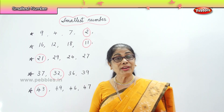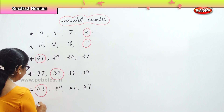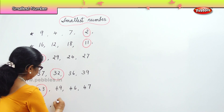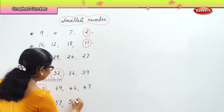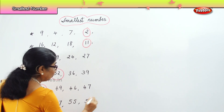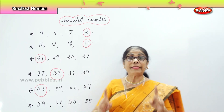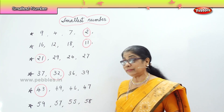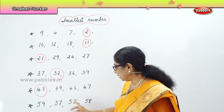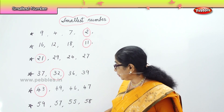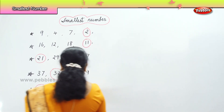Now we will do another lot of numbers in 50s and you will identify the smallest. I have here 59, 57, 55, 58. All numbers in 50s. The first numbers are 5, 5, 5, 5. Let's look at the second number: 9, 7, 5, 8. So you have 7, 8, 9 — and this 5 is the smallest. So which is the smallest number? 55. 55 is the smallest among 59, 57, and 58.